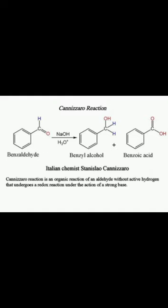The other product is the sodium or potassium salt of the corresponding carboxylic acid. In this reaction, when benzaldehyde reacts with 50% KOH or NaOH, it first gives a primary alcohol — benzyl alcohol (IUPAC name: 1-phenyl methanol) — and the other product is the sodium or potassium salt of benzoic acid. After hydrolysis, it gives benzoic acid as a major product. This is also called a self-disproportionation reaction.